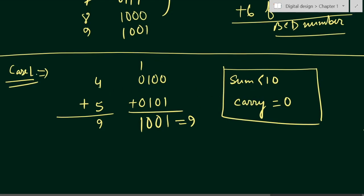If we consider 4+4, we get 8 — again no carry, and the sum is less than 10. So in Case 1, when the sum is less than 10 and carry equals 0, the BCD result after addition is already correct and valid.